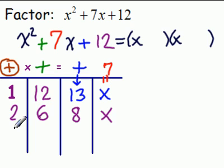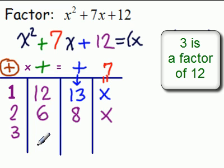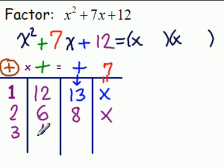The next divisor of 12 would be 3. 3 times 4 equals 12. 3 plus 4 is 7. That's good. So we're done.